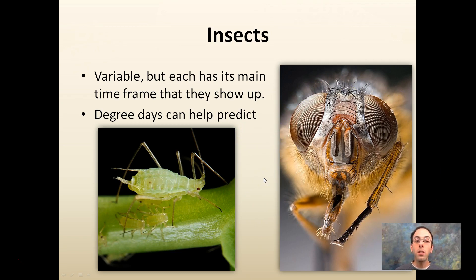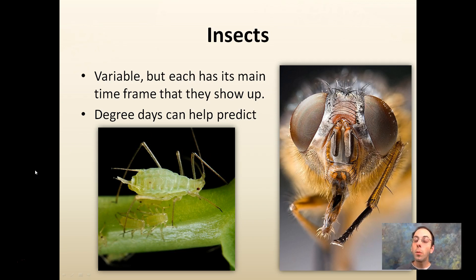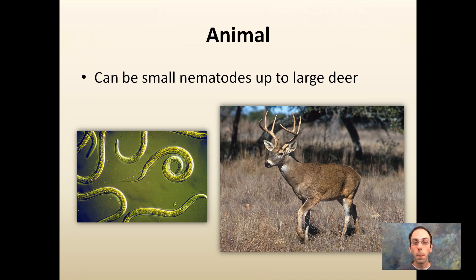Insects are another variable — each one has its own special properties and its main timeframe for showing up. A good idea of when to expect them: degree days can help predict this. Degree days are very important for some insects for monitoring and developing control measures — they can help you predict and time your applications and scouting accordingly.